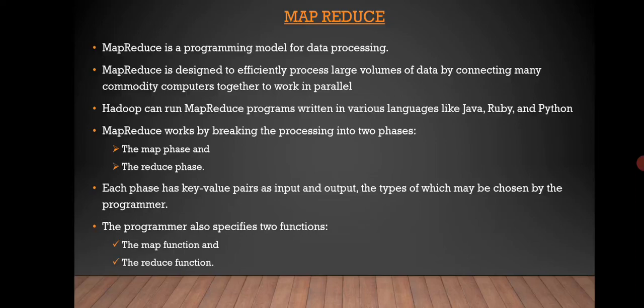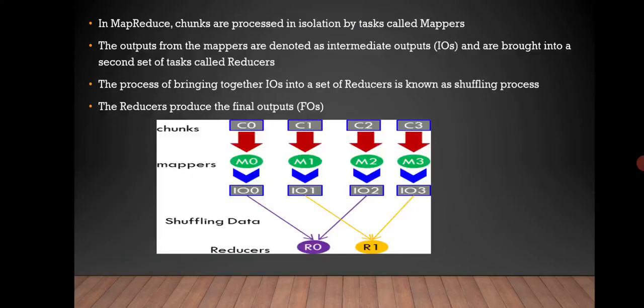MapReduce is a programming model for data processing. MapReduce is designed to efficiently process large volumes of data by connecting many commodity computers together to work in parallel. Hadoop can run MapReduce programs written in various languages like Java, Ruby, and Python. MapReduce works by breaking the processing into two phases: the Map Phase and the Reduce Phase. Each phase has key-value pairs as input and output, the types of which may be chosen by the programmer, who also specifies the map function and the reduce function. In MapReduce, the chunks are processed in isolation by tasks called mappers. The outputs from the mappers are intermediate outputs and are brought into a second set of tasks called reducers. The process of bringing together the outputs into a set of reducers is known as the shuffling process. The reducers produce the final outputs, and this diagram shows the chunks, mappers, and the shuffling of data using reducers.